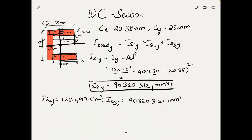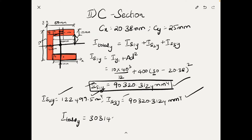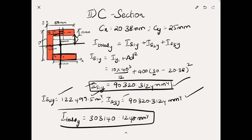Adding the individual Y-axis moments of inertia together: I_total_Y = 90,320.31 + 122,499.5 + 90,320.31 = 303,140.12 mm⁴. This is the moment of inertia along the Y axis for the C-section.